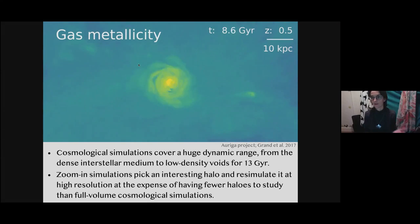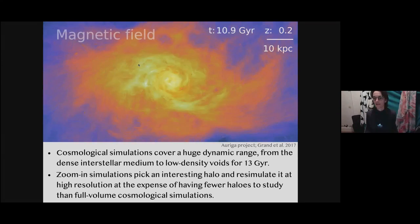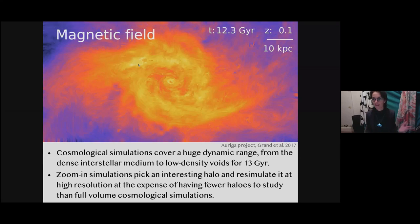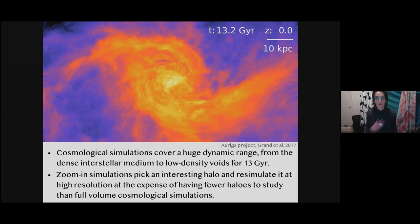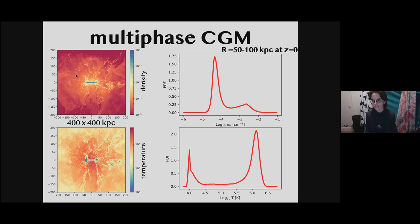One way to do better than 400 megaparsec cubed volumes with relatively poor resolution is to do zoom-in simulations. You first run your full volume, then you pick a halo you're particularly interested in, and re-simulate only that one at very high resolution — at the expense of having just one galaxy and its satellites, and no longer having statistics. This is what the CGM looks like in one of my simulations: the top panels show density and the bottom panels show temperature. These are thin projections of about 20 kiloparsec. You can see hot diffuse gas as well as denser, cooler gas.